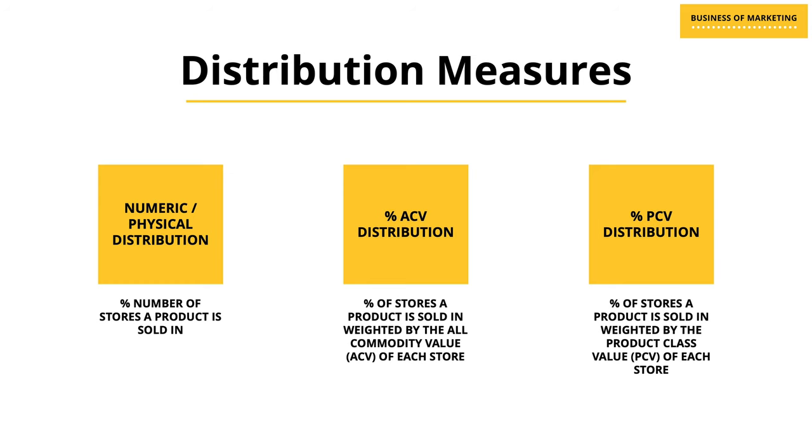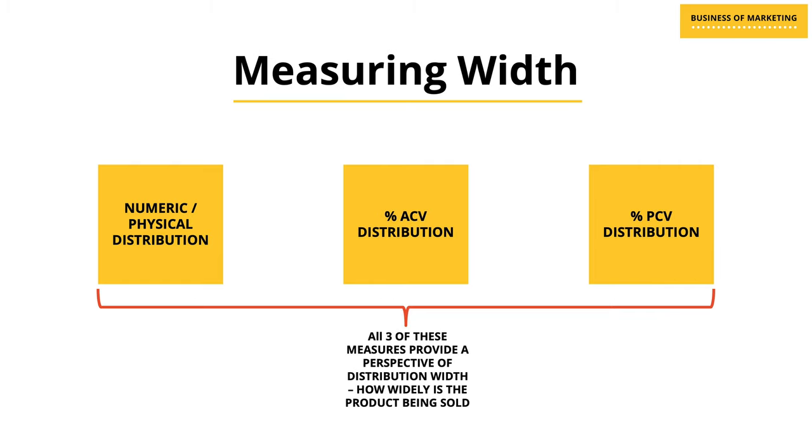In my previous video I spoke about three important measures of distribution: numeric distribution, percentage ACV distribution, and percentage PCV distribution. These measures help you understand the width of the distribution of your product or brand in a particular market. In today's video we will be looking at two more measures of distribution — the first one which is a measure of the depth of distribution, and the second one which is a comprehensive overall measure of distribution.